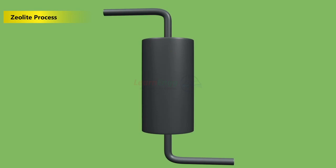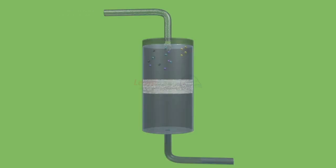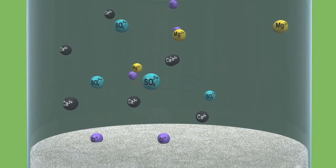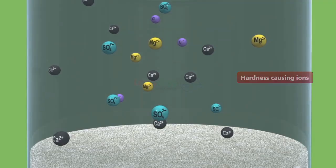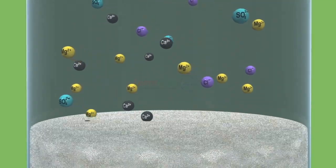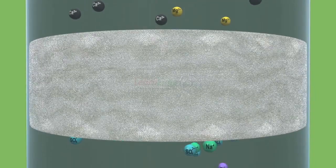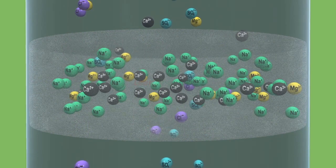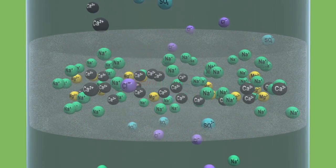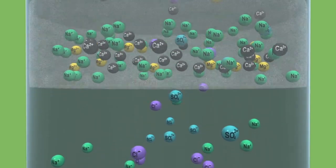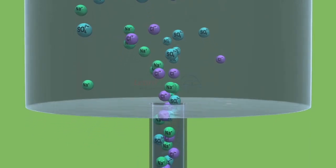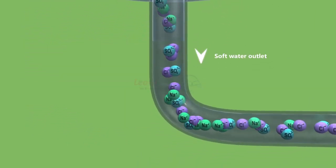Zeolite process: zeolite is hydrated sodium aluminium orthosilicate capable of reversibly exchanging its sodium ions with hardness-producing ions in water. Hard water is passed through the zeolite bed at a specified rate. The hardness-causing ions such as Ca²⁺ and Mg²⁺ are retained by the zeolite bed as CaZ and MgZ respectively, while the outgoing water contains sodium salts and is soft water.